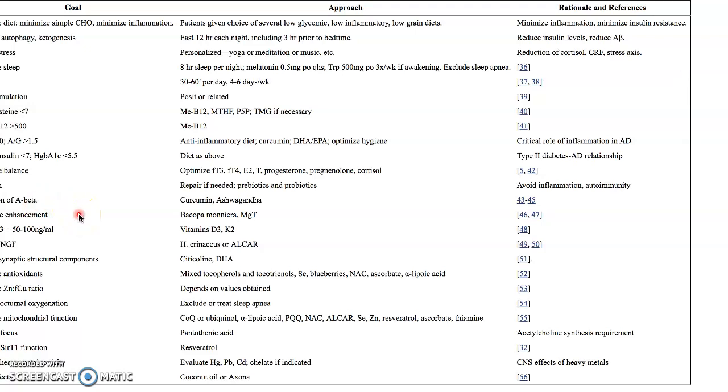It goes on down the list with different things. One that stands out is resveratrol, which is in red grapes. This is why everyone wants to drink red wine because it's healthy. The bad thing is, to get enough resveratrol to make a difference and increase your sirtuin gene expression—the longevity genes—you'd have to drink about a thousand bottles of red wine, which I think might be counterproductive.